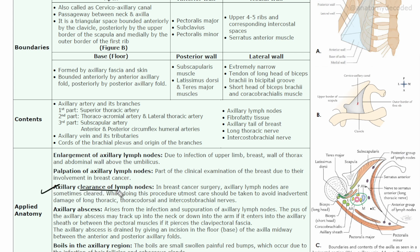Axillary clearance refers to the surgical removal of lymph nodes. In breast cancer surgery, the axillary lymph nodes have to be removed, and during this procedure care must be taken to avoid injury to the long thoracic nerve, thoracodorsal nerve, and intercostal brachial nerve.